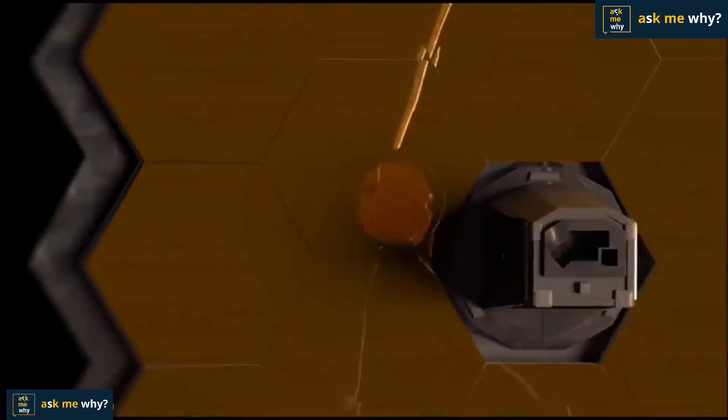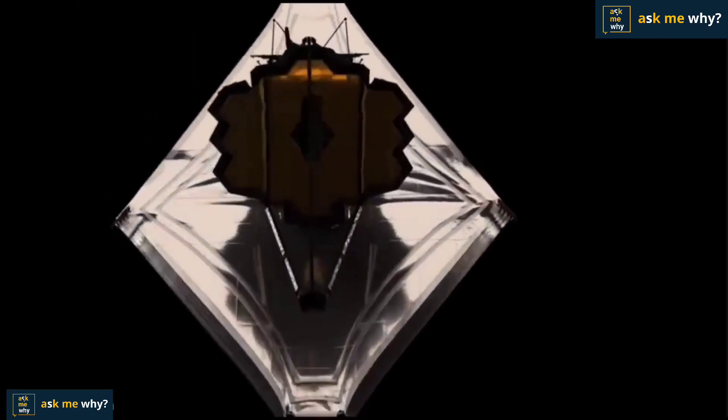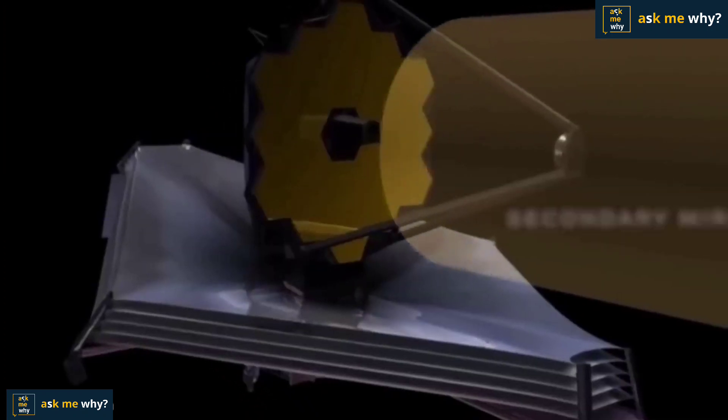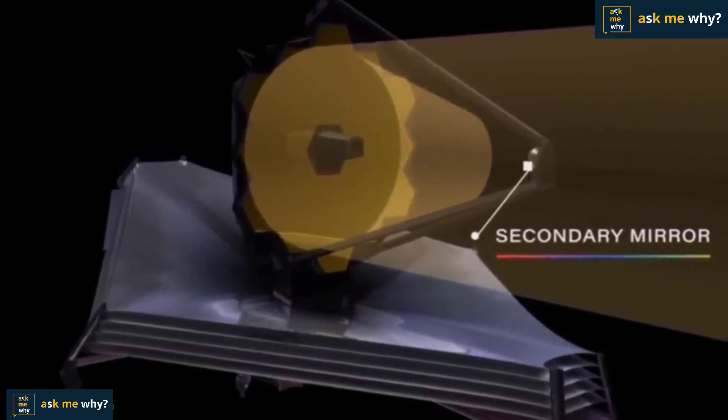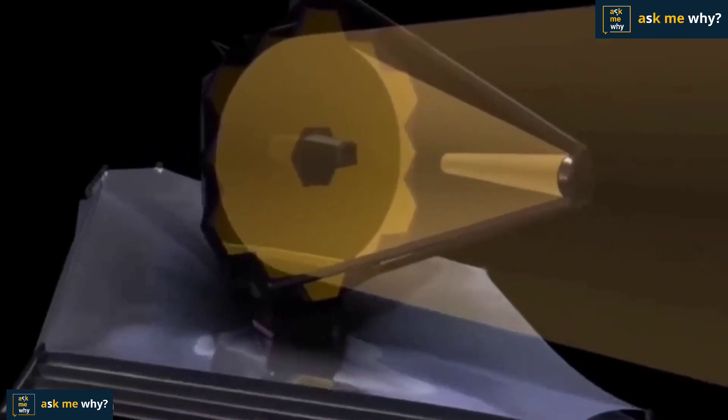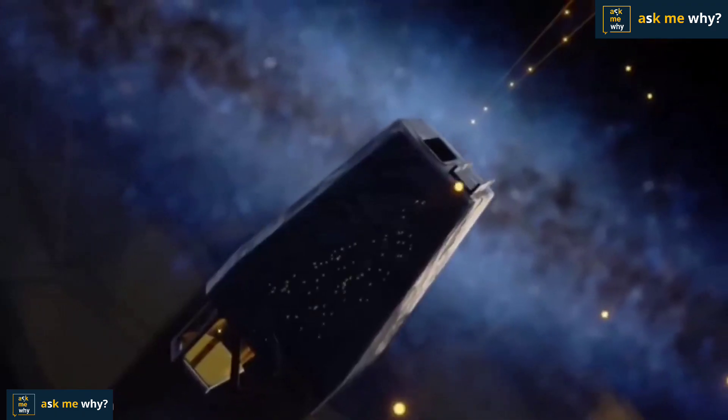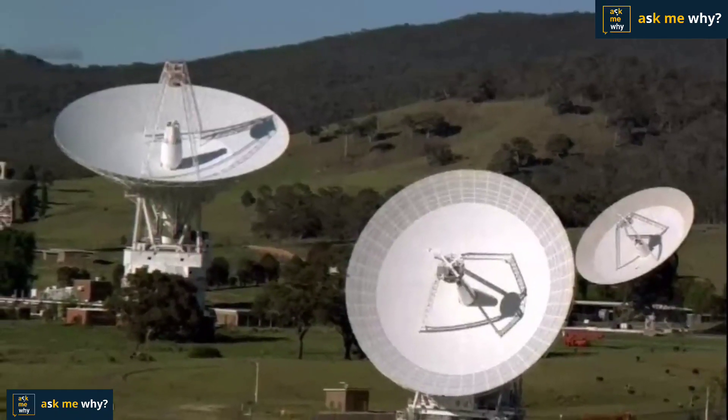If we look at its working, first the light coming from the universe is collected by the primary mirror which is 6.5 meters long. It gets reflected and falls on the second mirror. From there, it goes to the third and fourth mirror where the light photons are converted into electrons which are recorded in the data recorder in the telescope. And the data is sent to the NASA Deep Space Network on Earth through a radio transmitter.